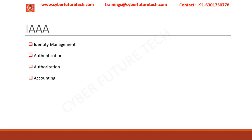Next comes authorization. If someone wants to access any server or device in an organization, they need to be authorized. For example, if you want to install an application, it will ask for administrator access, so authorization cannot be done by everyone — only authorized persons can access the required resources.